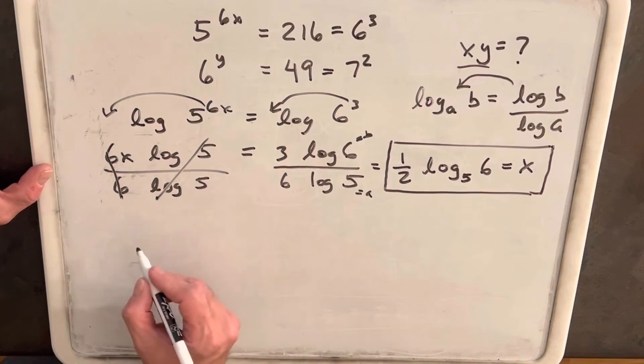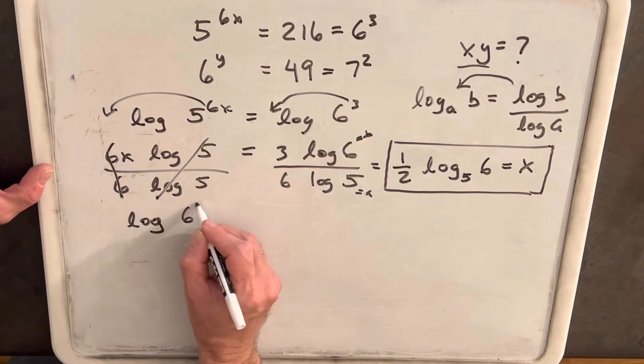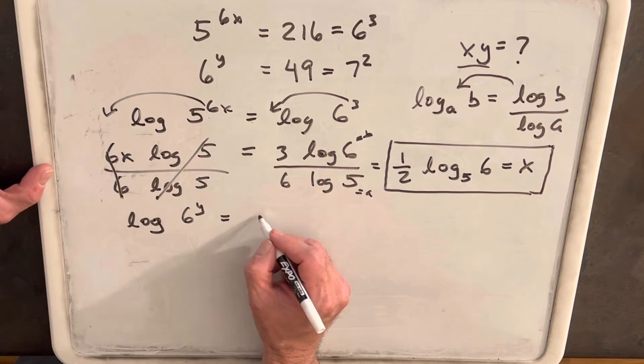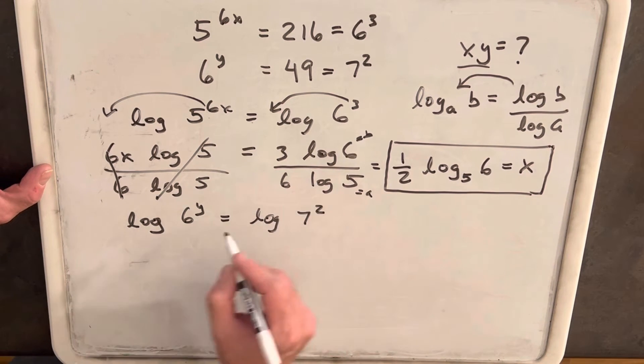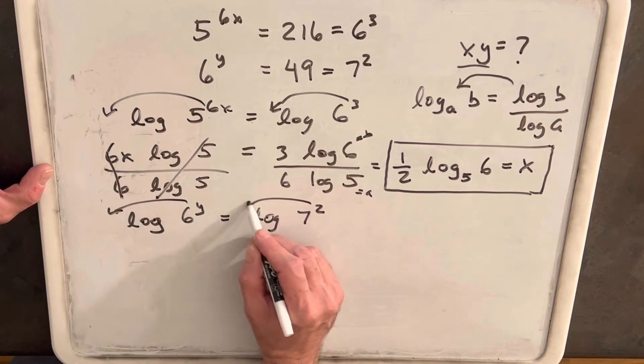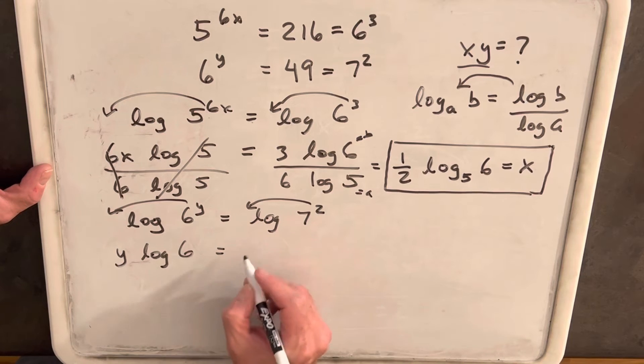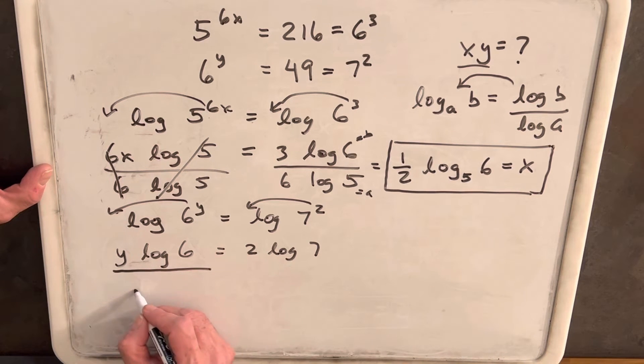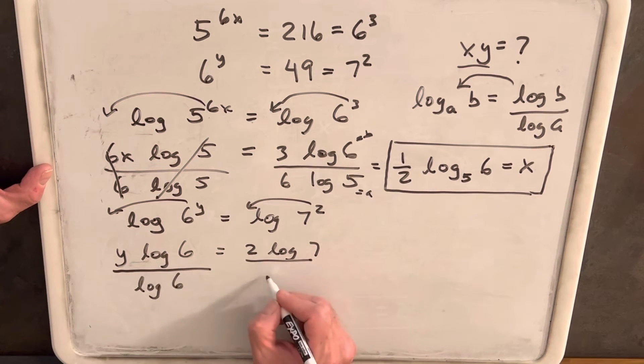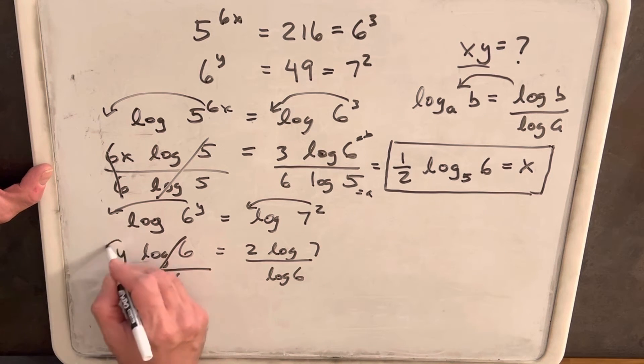So then let's do the same thing for y. We'll have log 6 to the y equals log of 7 squared. Again, bring our exponent to the front. We'll have y log 6 equals 2 log 7. Here we'll just divide by log of 6, divide, log of 6, cancel. So we just have our y on the left side.